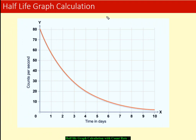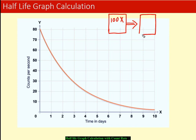First of all, let's try to understand what half-life is. Let's say we have 100 atoms of element X. After a certain period of time, we have only 50 atoms of element X and we get 50 new atoms of element Y. It means element X has decayed into element Y. The average time taken for the atoms of X to become half is what we call half-life.